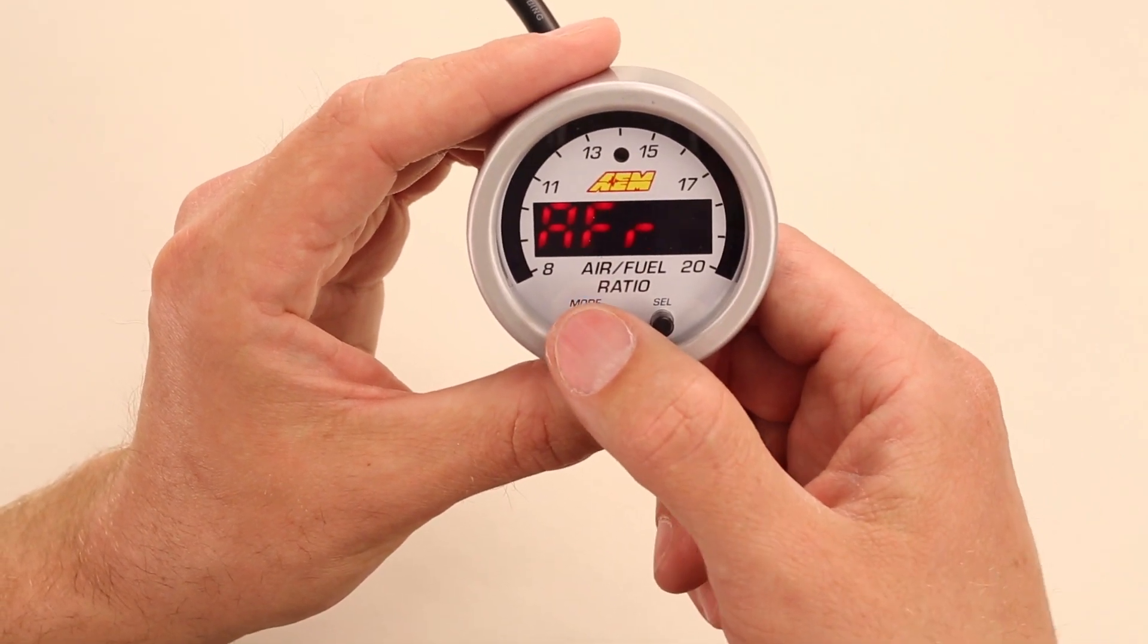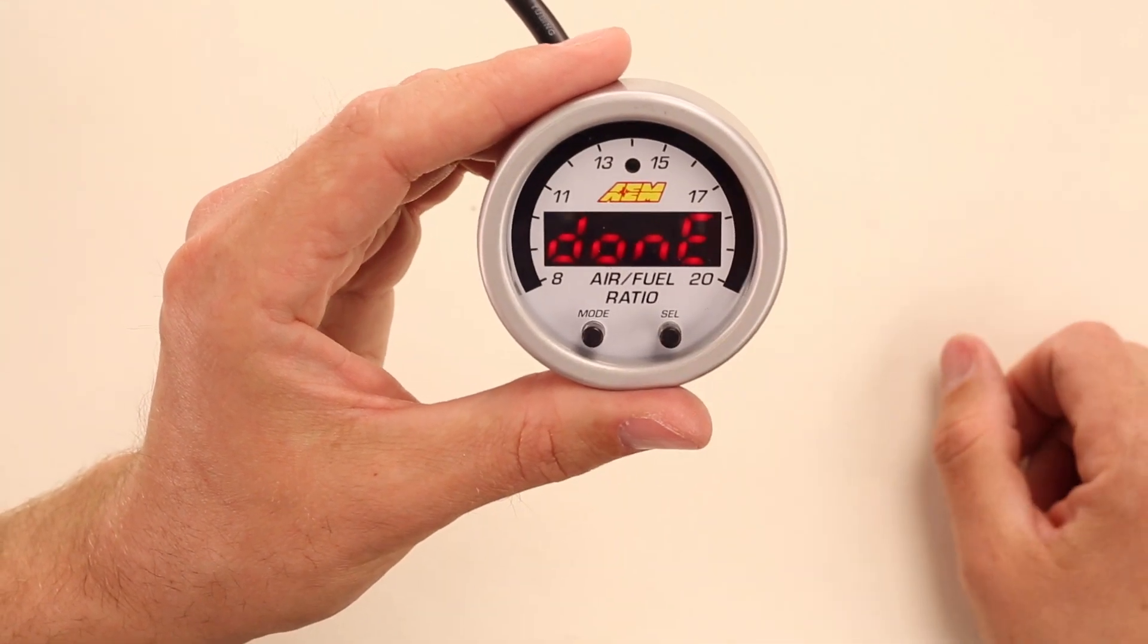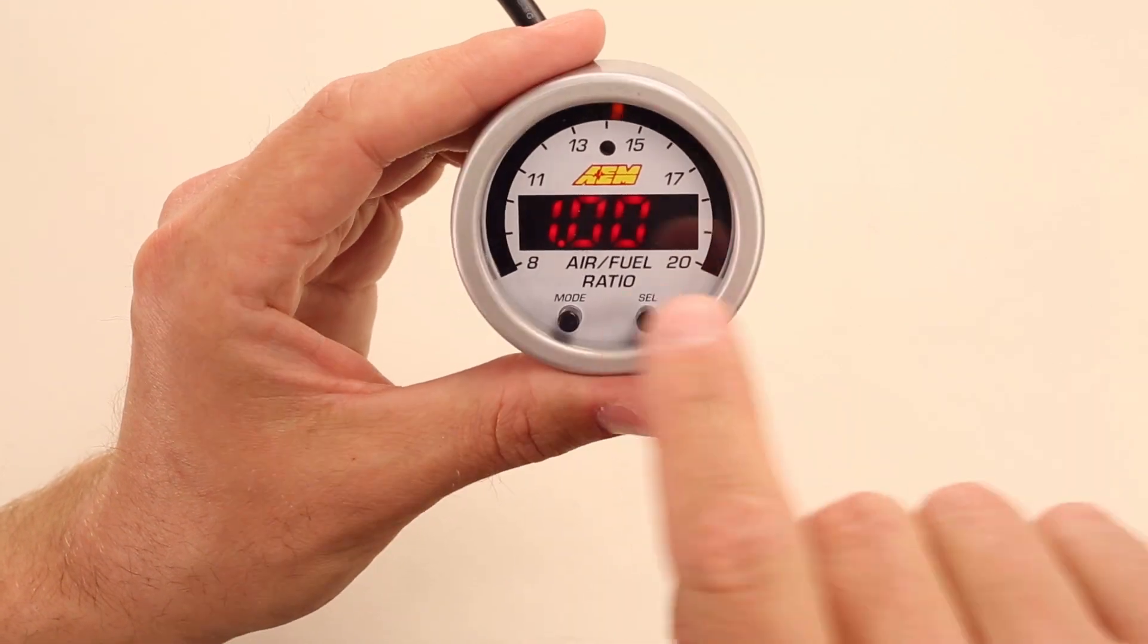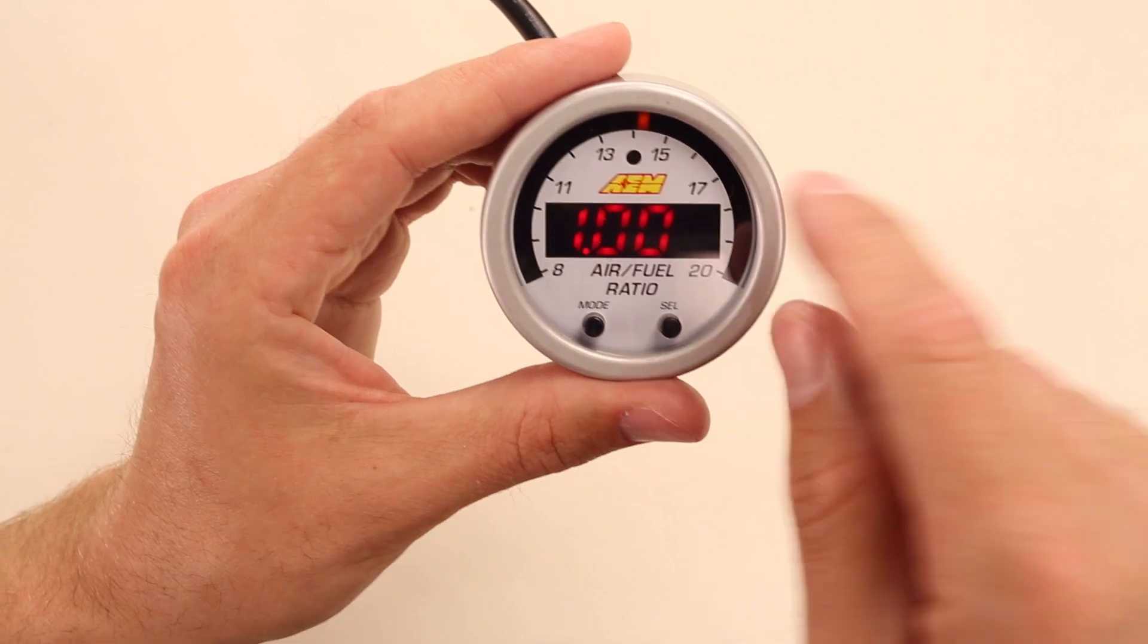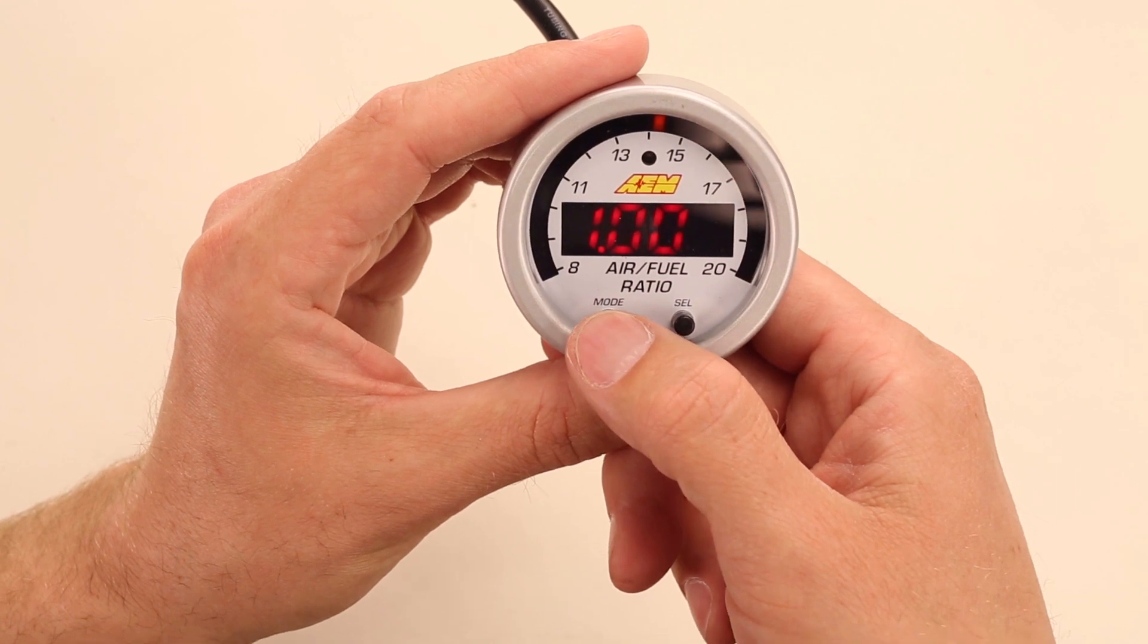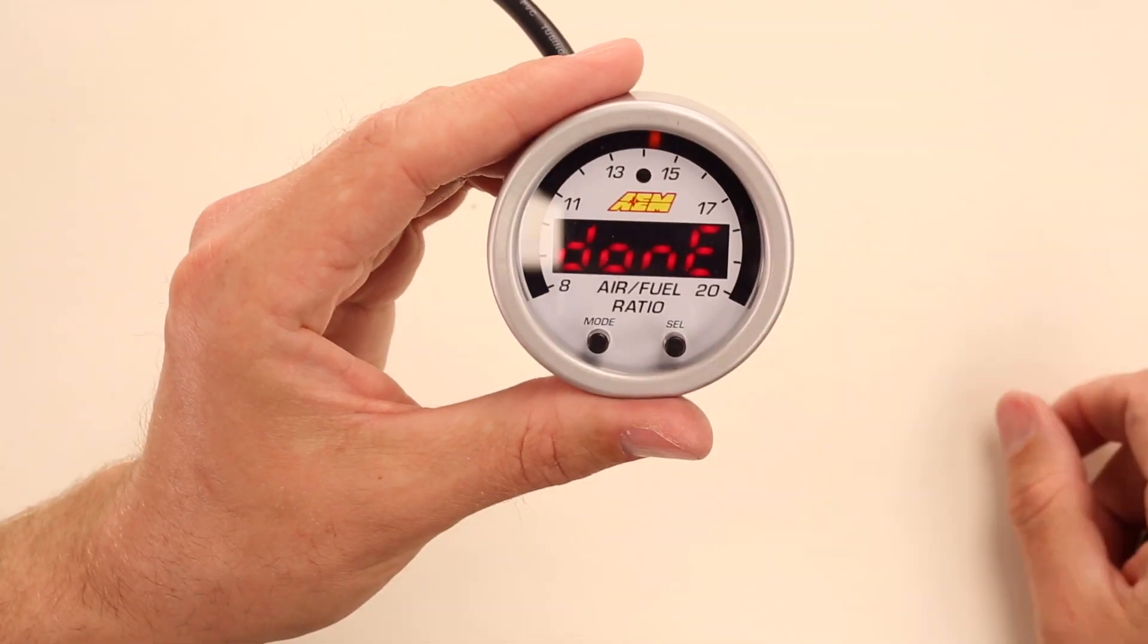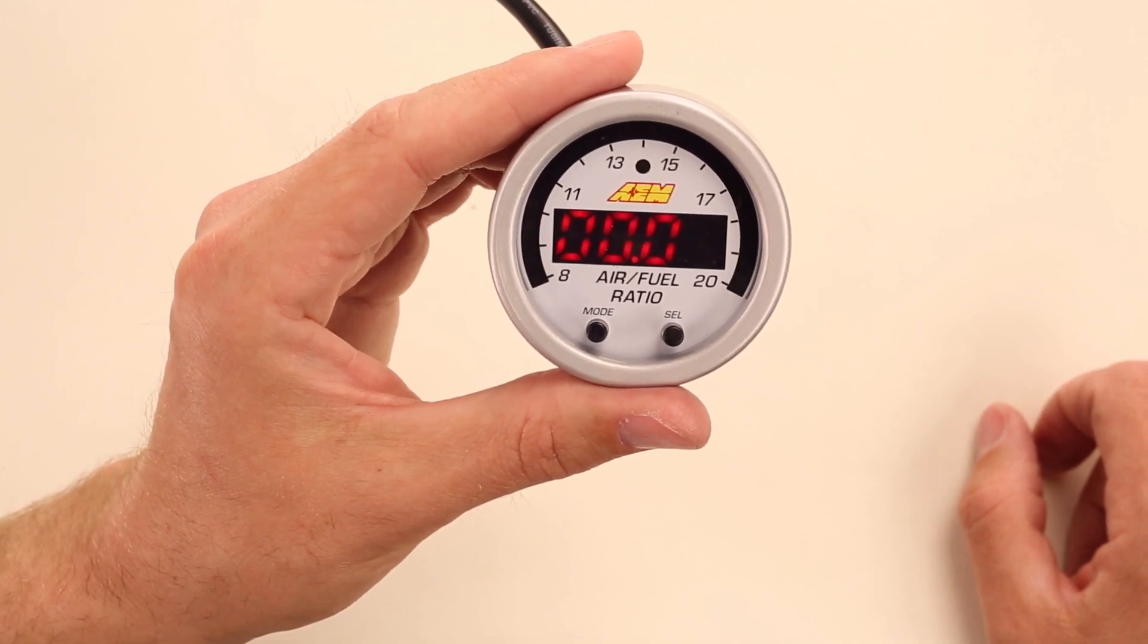If you want to read in lambda, you keep hitting the mode button and then select. And then it will default to lambda, both basically rich or lean. And you'll also see a digital LED indicator move around the top of the screen. 1.0 right now, perfect straight up and down. There's also the option that you can select of an O2 percentage. If that's how your calibrator or you're used to reading air fuel ratio.